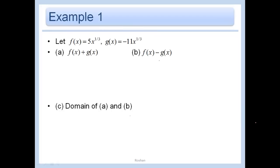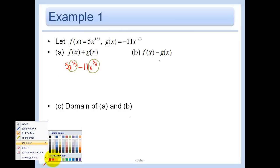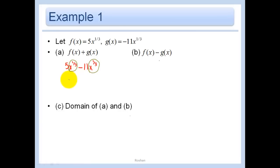Let's use some of these operations on functions. Let's add f of x plus g of x, where f of x is 5x to the 1/3 and g of x is negative 11x to the 1/3. Since we have 5 of these x to the 1/3 and subtract 11 of them, we're combining like terms, giving us negative 6x to the 1/3 as our final answer.